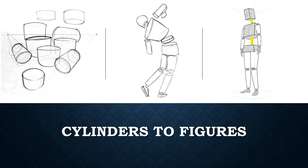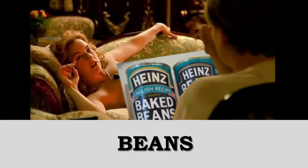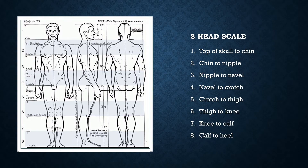If in doubt, pull a can of baked beans from the cupboard and draw it like one of your French girls for reference. Note that you'll be utilizing cylinders drawn to represent each solid area of the body, such as major bones or the ribcage.